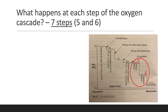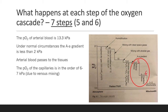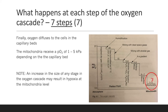Steps 5 and 6: the PO2 of arterial blood is 13.3 kPa. Under normal circumstances, the alveolar arterial gradient is less than 2 kPa. Arterial blood then passes to the tissues, where the PO2 of the capillaries is in the order of 6 to 7 kPa. The decrease from arterial blood to capillary blood is due to venous mixing. Finally, oxygen diffuses to the cells in the capillary beds, and the mitochondria receive a PO2 of 1 to 5 kPa depending on the specific capillary bed.